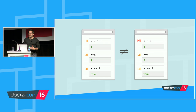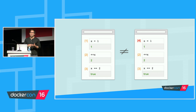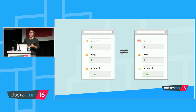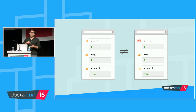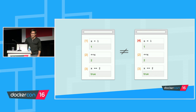One of the problems we had with the way REPLs work is that they're append-only. So if I run a bunch of steps and then I want to change something in the middle — maybe I want to tweak some parameter — I've got to essentially up-arrow a few times, change my thing, run that one, and then run each subsequent command. And that's not a great experience.